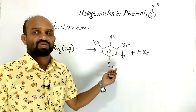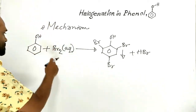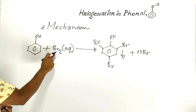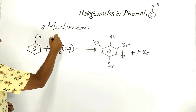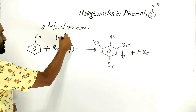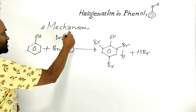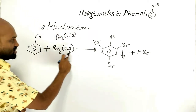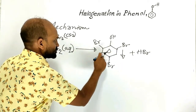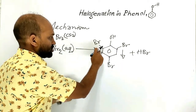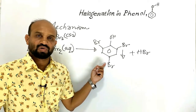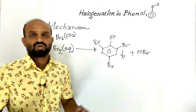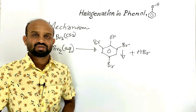Let's see the mechanism of the reaction. When aqueous solution of bromine is used instead of bromine solution in carbon disulfide, we get 2,4,6-tribromophenol instead of ortho-bromophenol and para-bromophenol. What is the reason behind this — that is, what role does water play?